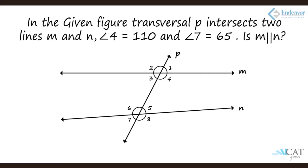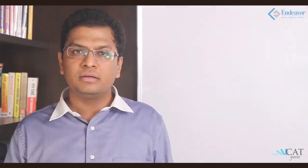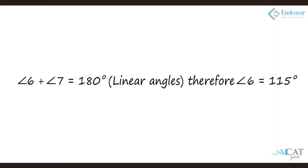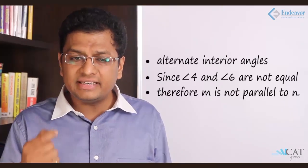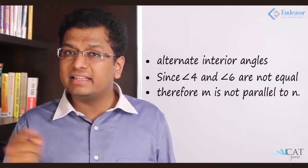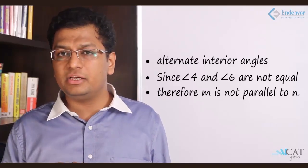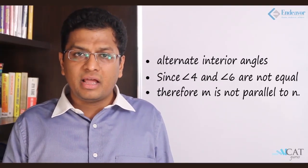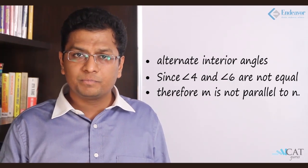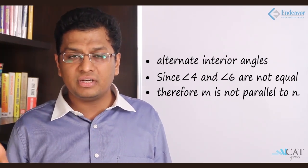Another example: Transversal P intersects two lines M and N. Angle 4 is 110 degrees and angle 7 is 65 degrees. Is M parallel to N? Angles 6 and 7 are a linear pair, so angle 6 = 180 − 65 = 115 degrees. By the alternate interior angles concept, angles 4 and 6 should be equal if M and N are parallel. Since angle 4 is 110 and angle 6 is 115, they are not equal — hence M is not parallel to N.